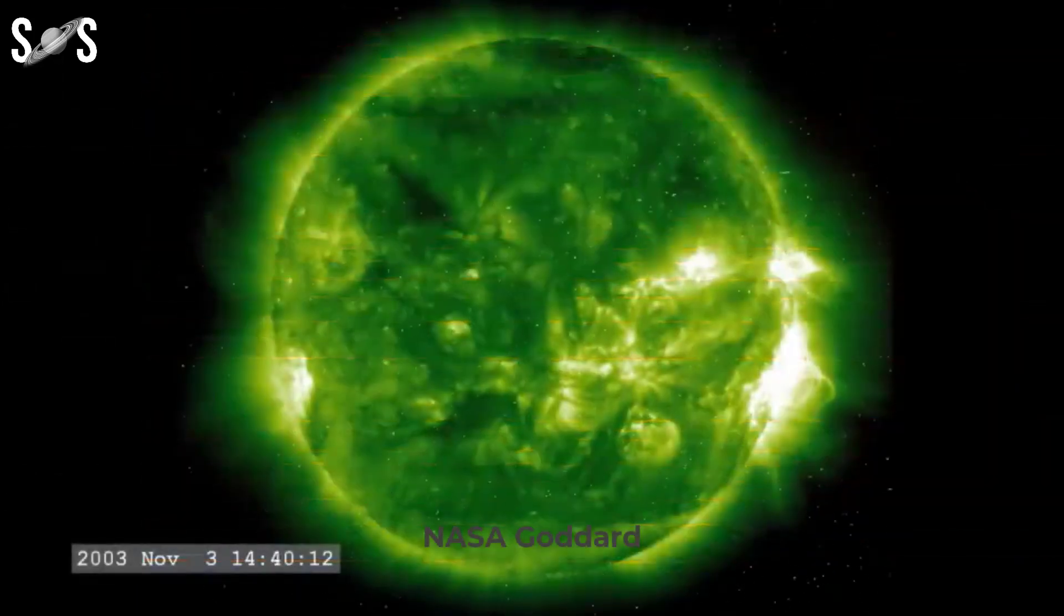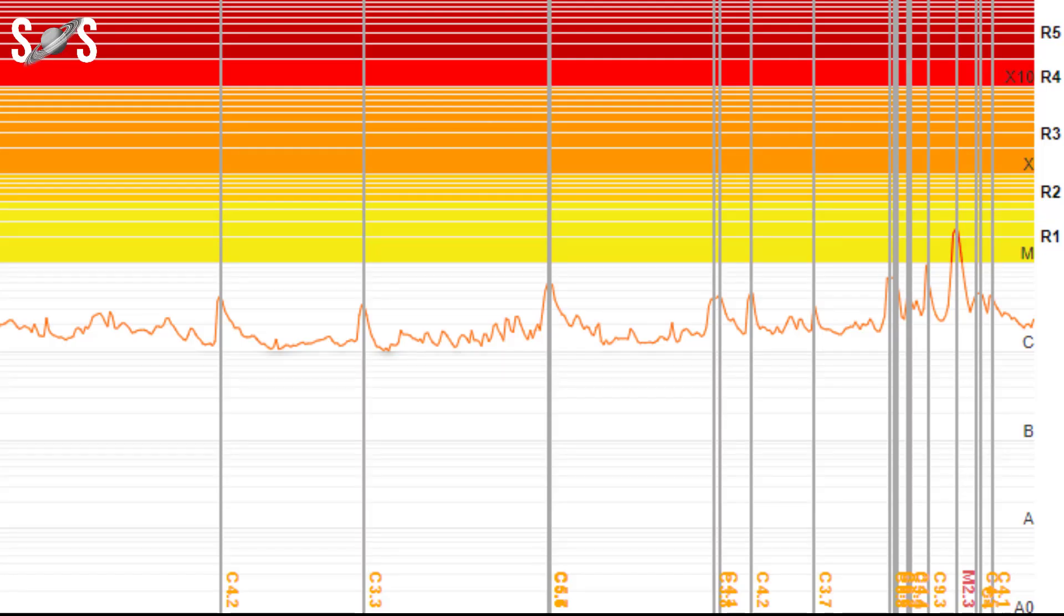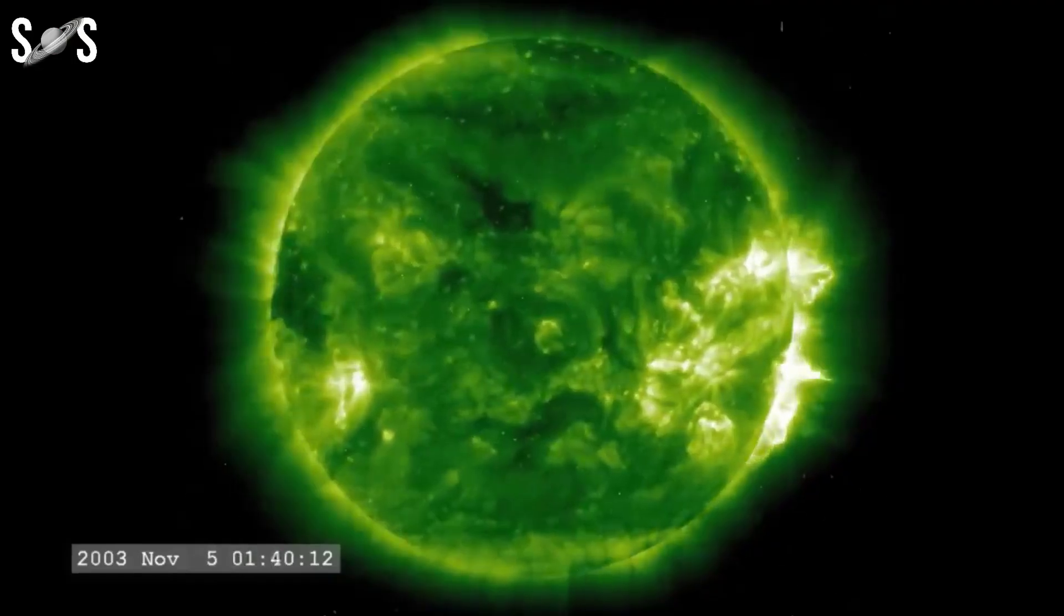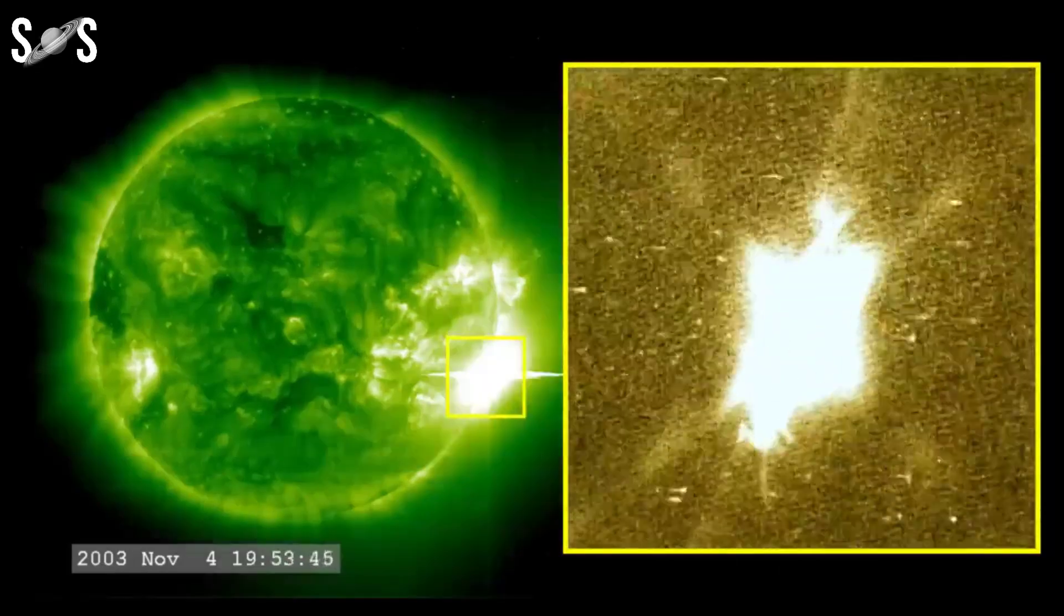Each class is further divided into subclasses, such as M1, M2, M3, and so on, to indicate the relative strength of the flare within its class.